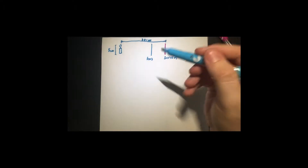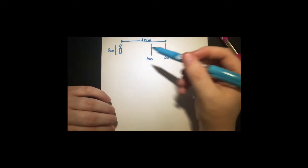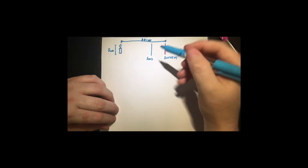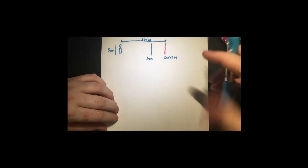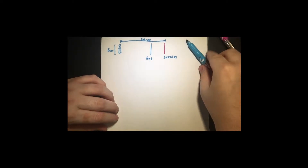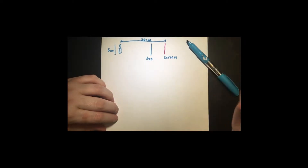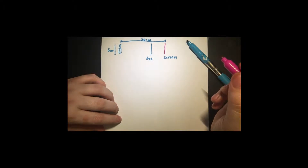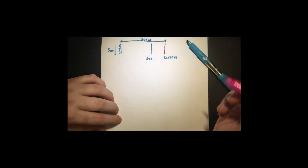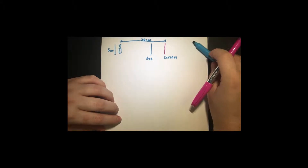Here's my picture of the candle, the lens, and the screen. The first thing we want to know is: what is the magnification of the image Felicity sees?